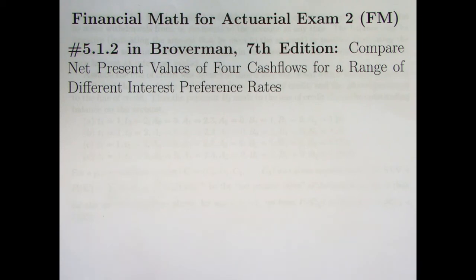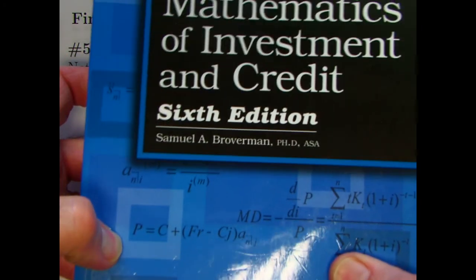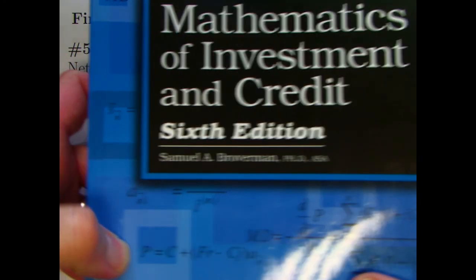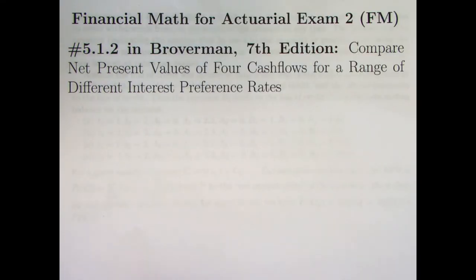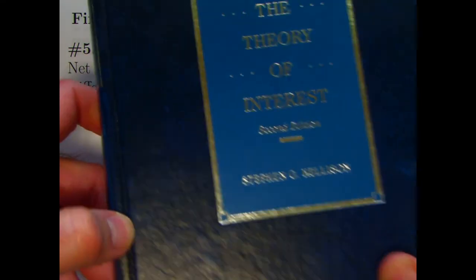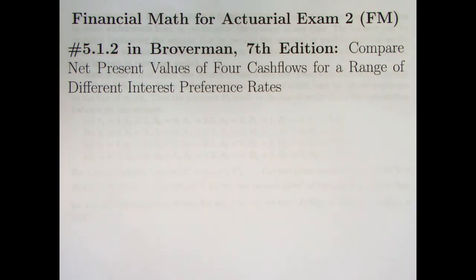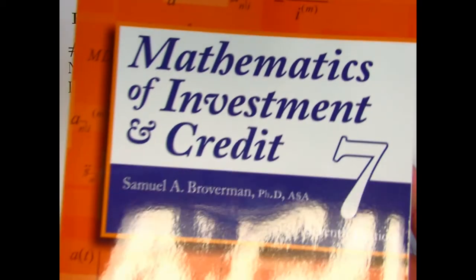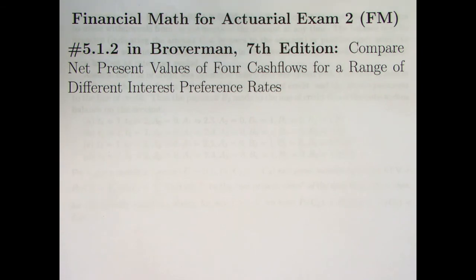Most of these videos, we've done problems from the 6th edition of The Mathematics of Investment and Credit by Samuel Broverman, sometimes also taking problems from the 2nd edition of The Theory of Interest by Stephen Kellison. But in these four months since I've made one of these videos, I got something special in the mail. I got the 7th edition of The Mathematics of Investment and Credit by Samuel Broverman.